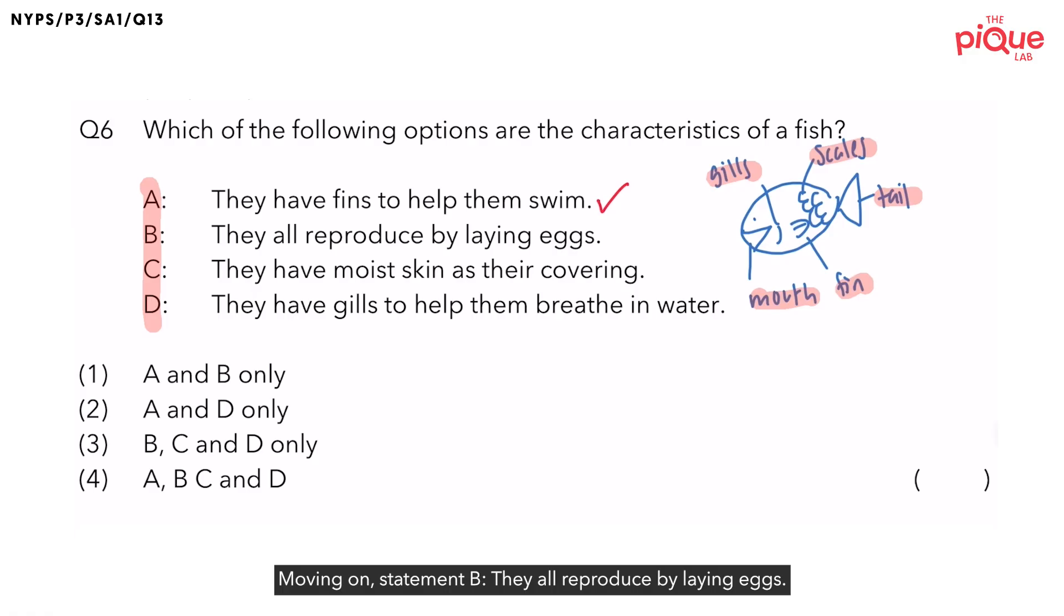Moving on. Statement B. They all reproduce by laying eggs. Is it true that all fish lay eggs? This is not true. Hence, I will cancel the word all. This is because there are some fish that give birth to young alive.